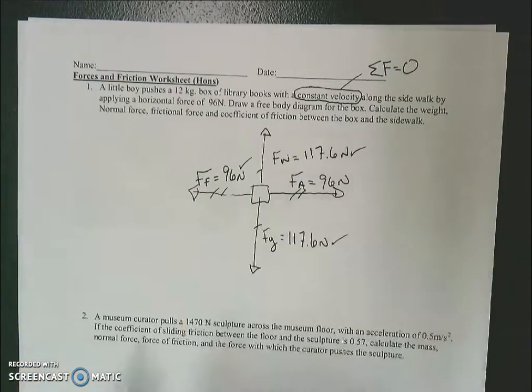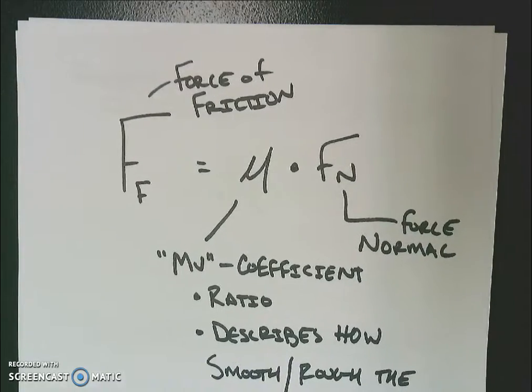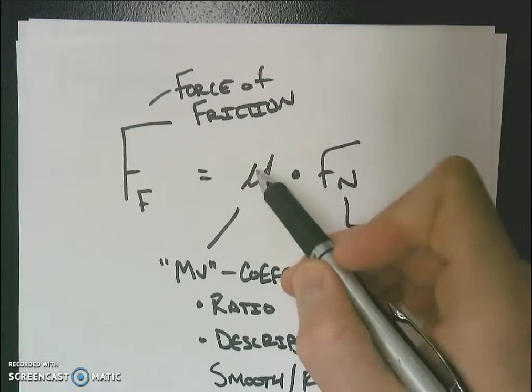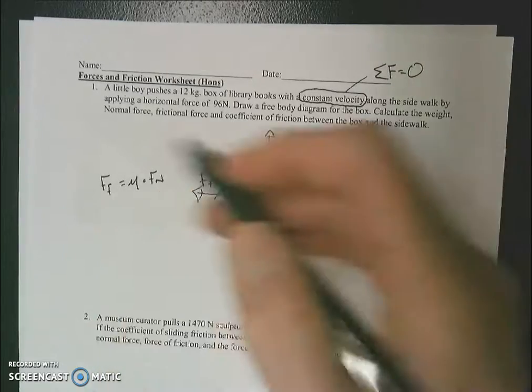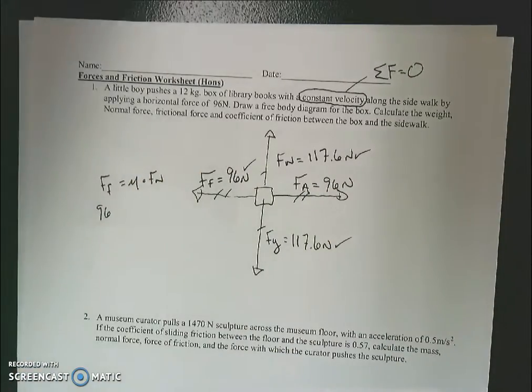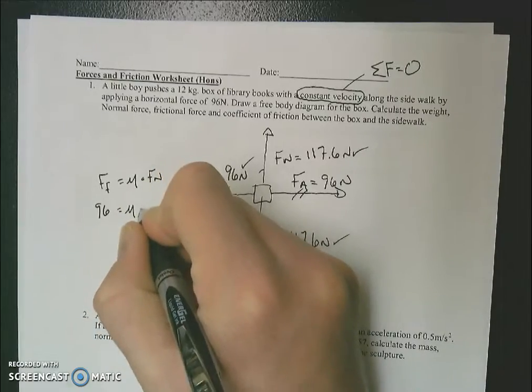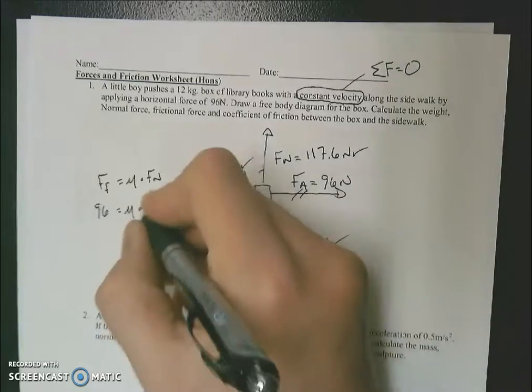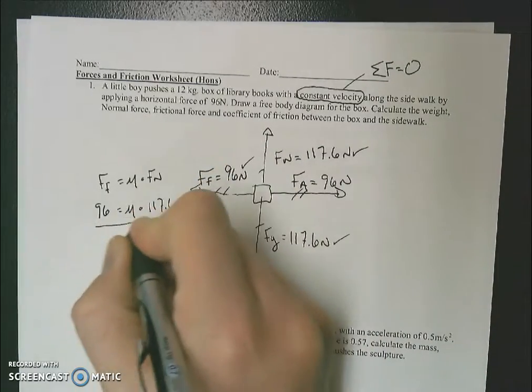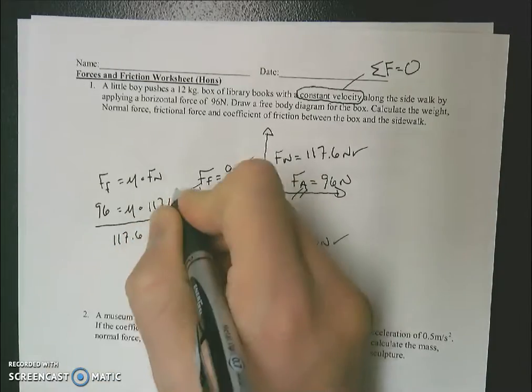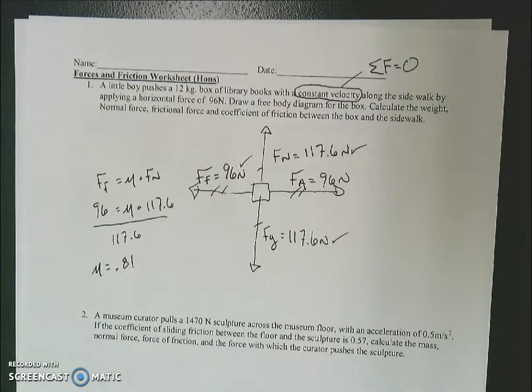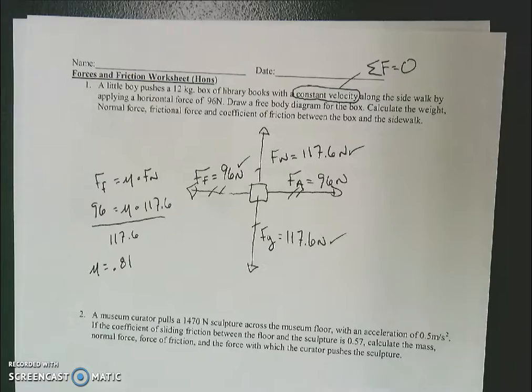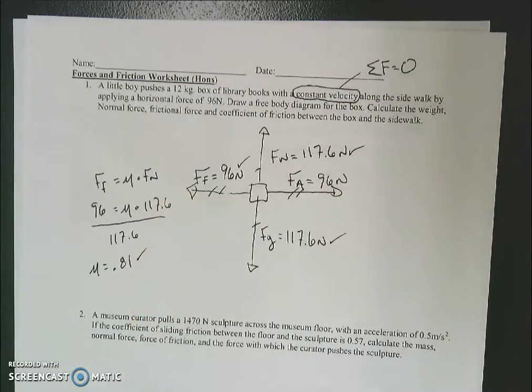Coefficient of friction, we've got to find. Back to our equation. Force of friction is mu times force normal. This is asking us to solve for the coefficient of friction. My force of friction is 96, my mu is what we're looking for, my normal force is 117.6. I divide both sides by 117.6 to get these to cancel. My coefficient of friction ends up being 0.81. There's no label on our coefficient because it's a ratio of force and force, so the force label cancels. Got everything we're looking for.